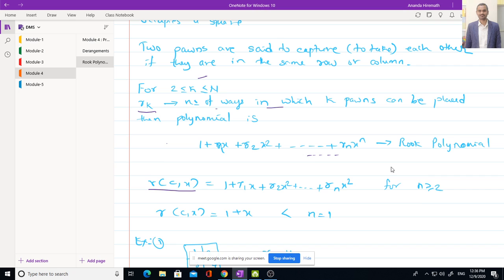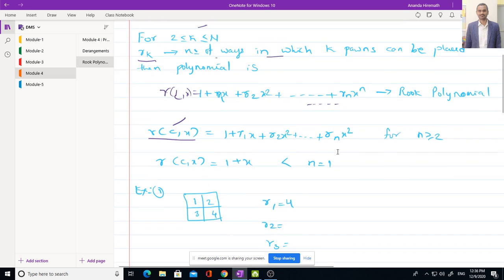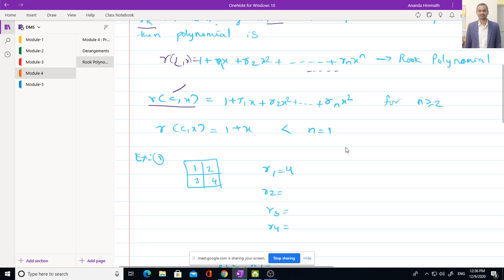Where C indicates board and X is variable. Now the same formula R of C comma X equal to that also. Now I will take one example then it will be more clear. As of now you may feel like you have not understood anything maybe because the board. It has four squares and there are four positions 1, 2, 3, 4.